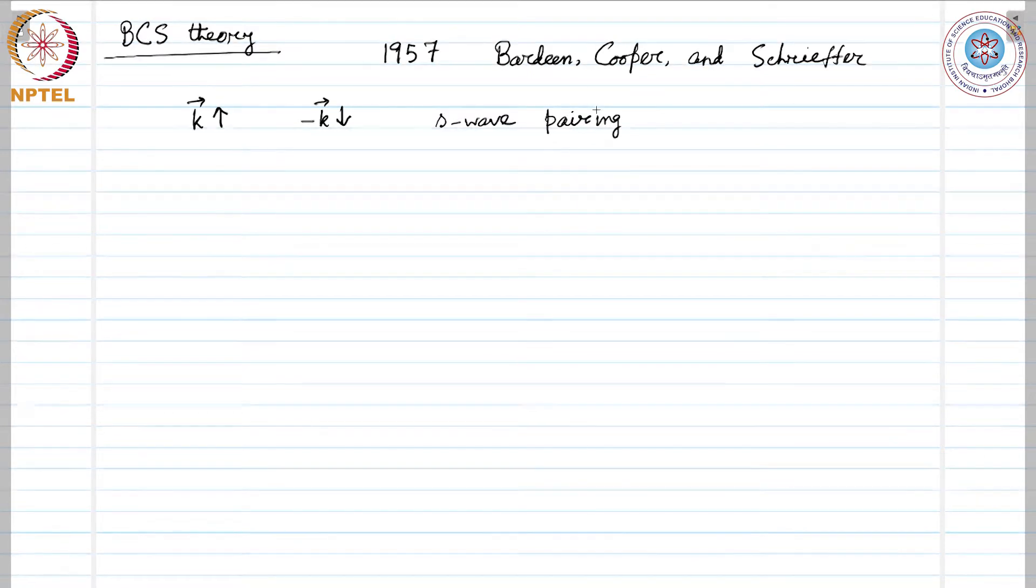There are other forms of particle pairing possible within BCS theory. The BCS theory is quite an accomplished theory. The main accomplishments of BCS theory we are going to discuss now. We will not derive the entire BCS theory because that is quite cumbersome and beyond the scope of this course. We will rather discuss the outcomes of BCS theory and the accomplishments it achieved.